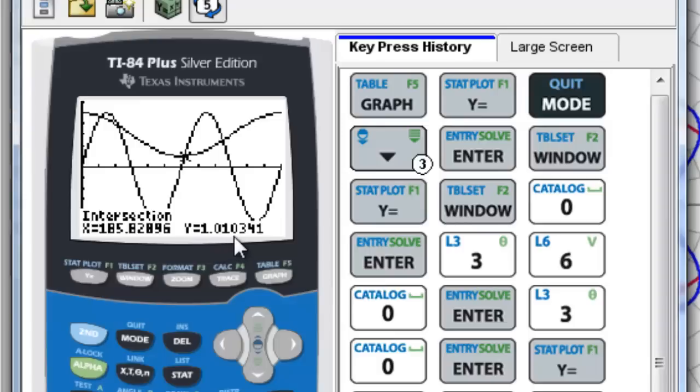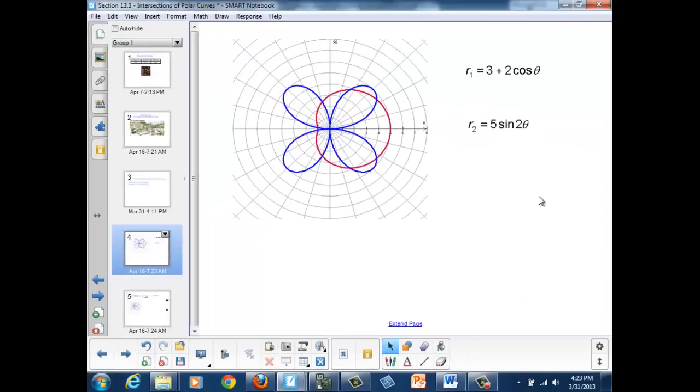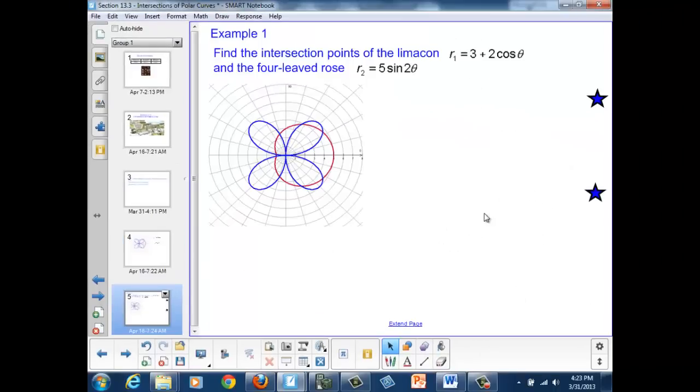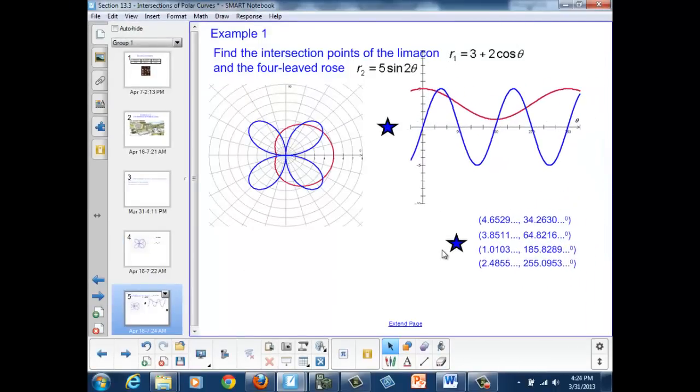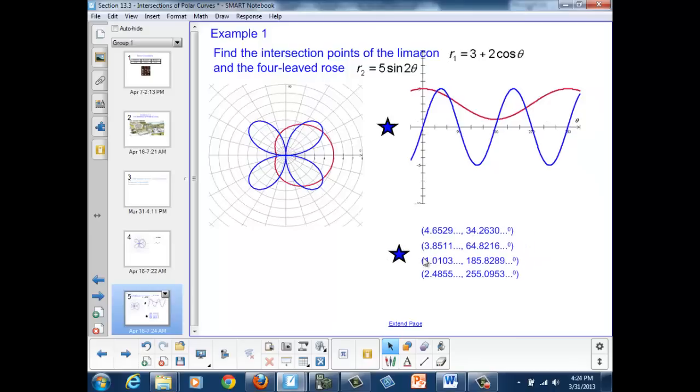We could repeat the process for the other three true intersections, and we should find that off of this graph, our intersections are these four values.